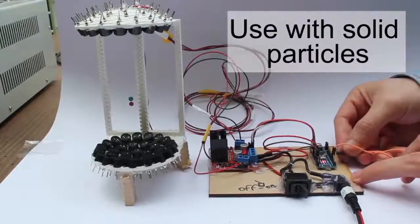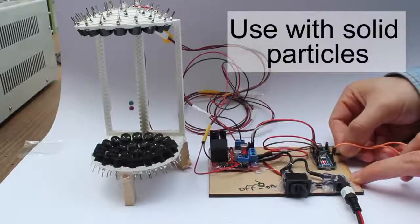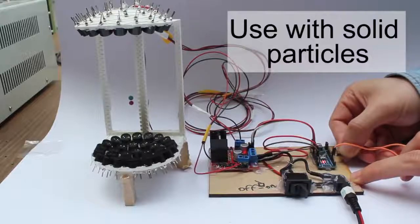If you connect ground to D2, the particles will go down. To D3, they will go up. And D4 will reset.